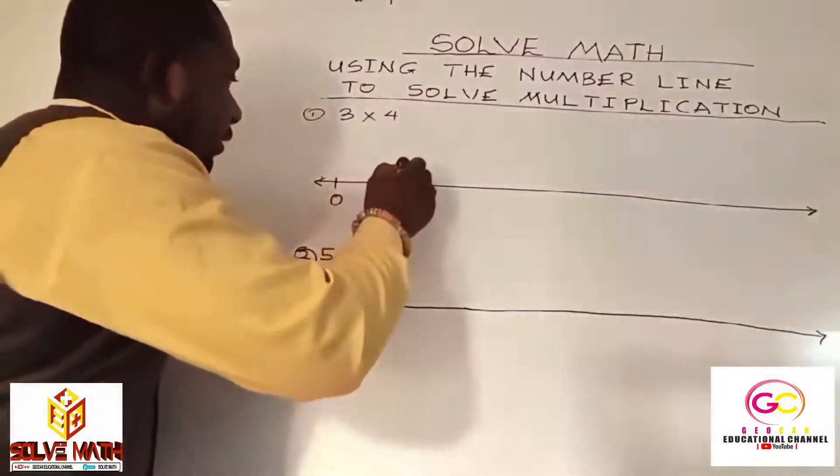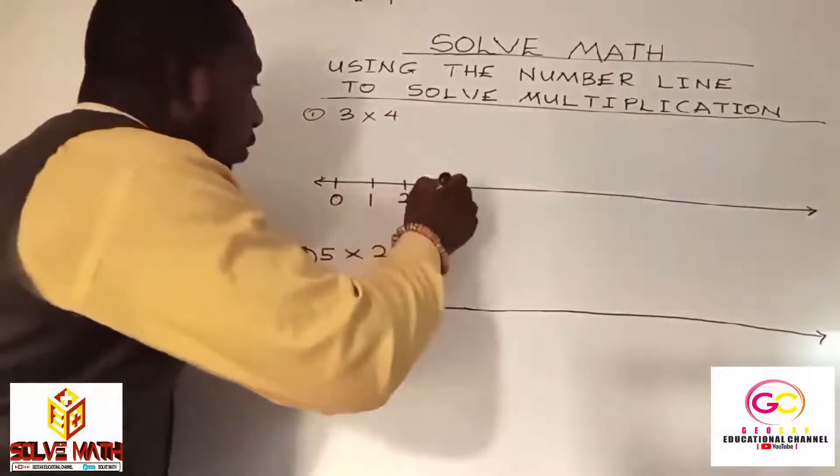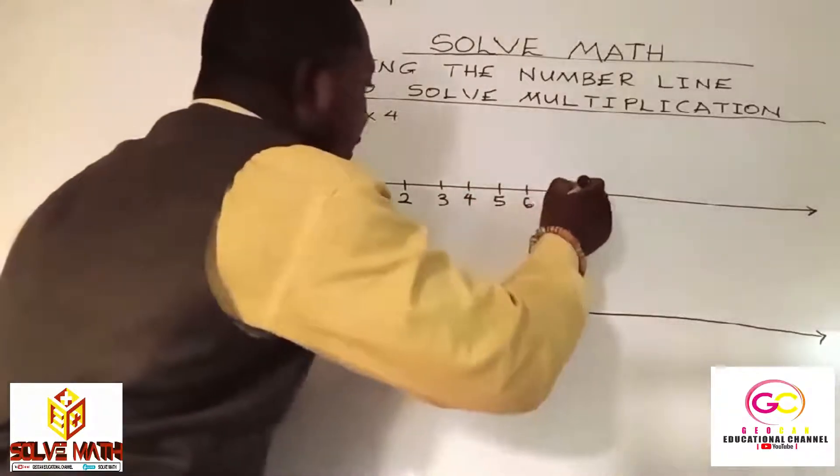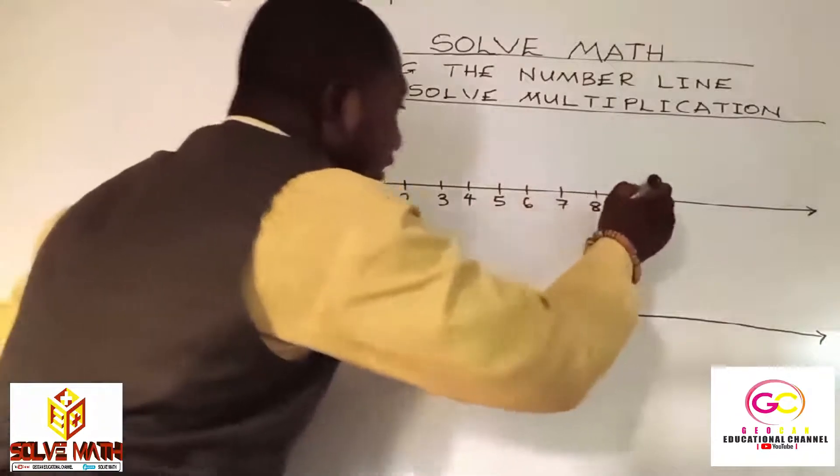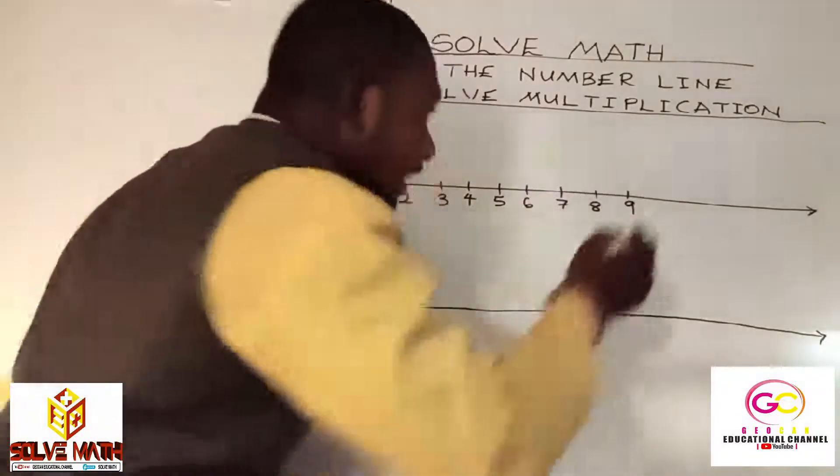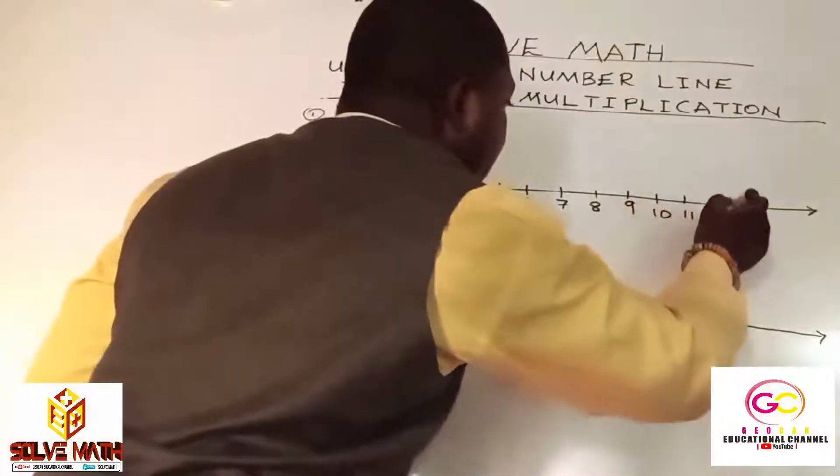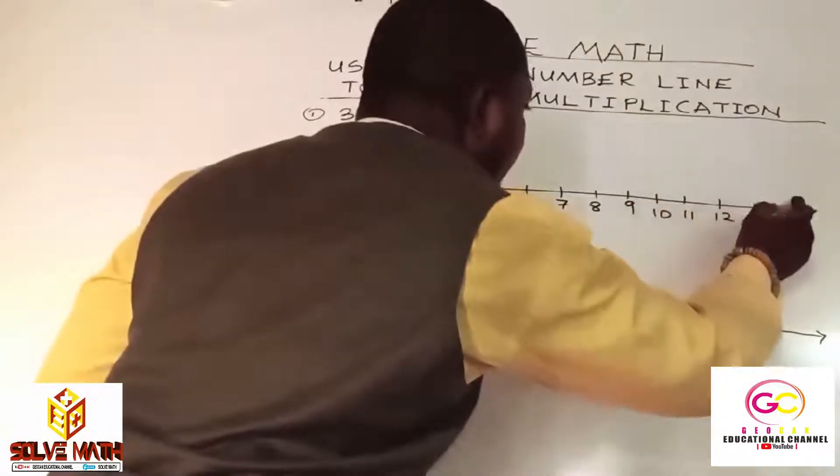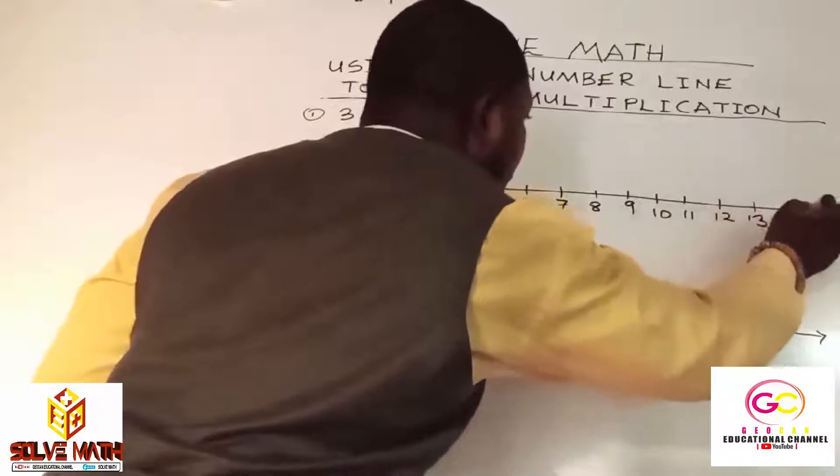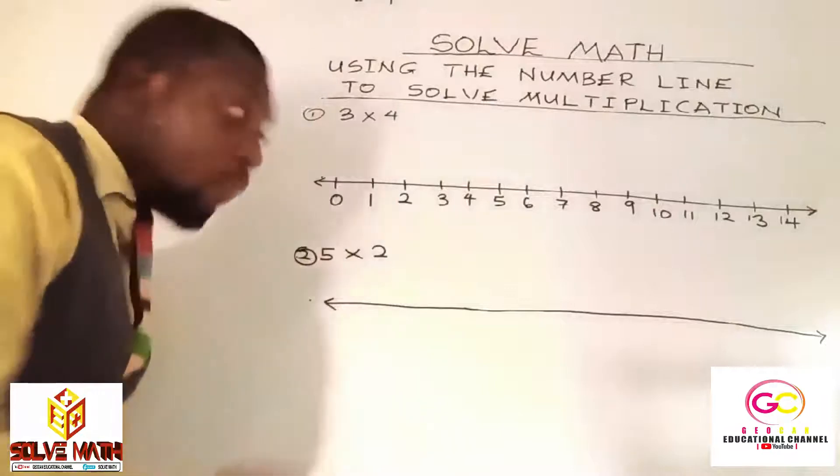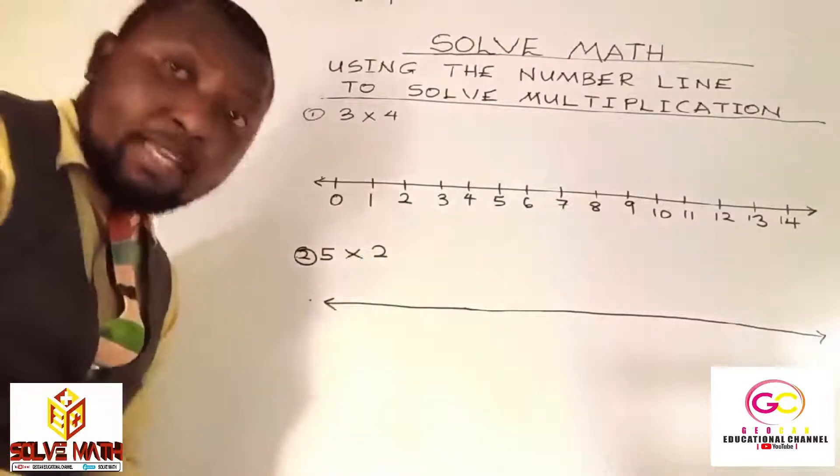0, 1, 2, 3, 4, 5, 6, 7, 8, 9, 10, 11, 12, 13, 14. Okay, we can end with this. We are going to use this to solve this particular multiplication question.